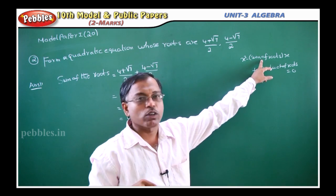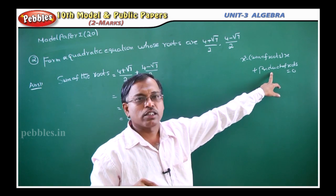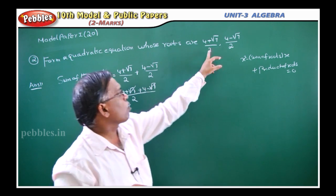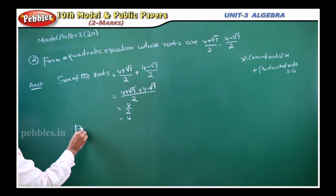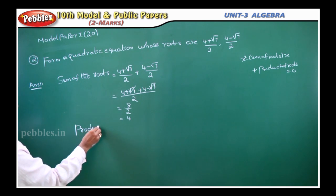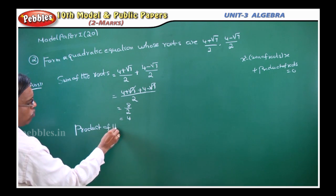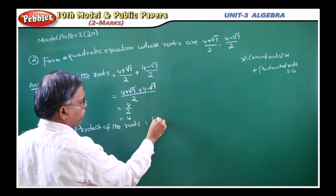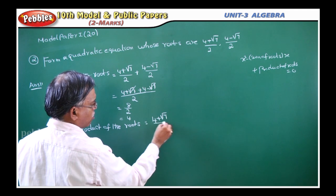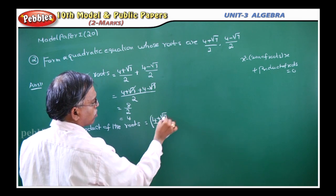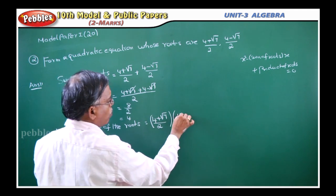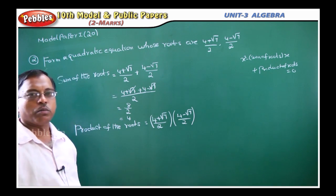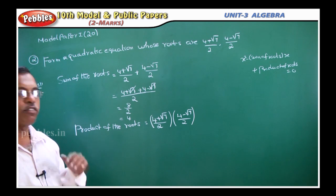Now the other quantity to find is the product. Product means multiplication, sum means addition. Product of the roots = (4 + √7)/2 × (4 - √7)/2. This is the meaning of product — multiplication of the given two roots.